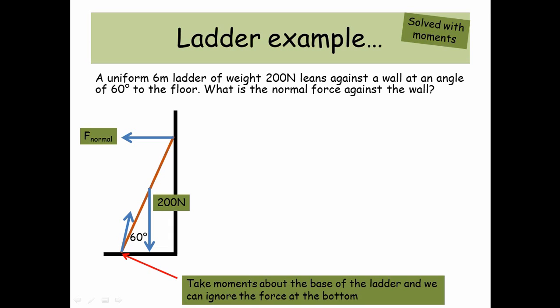So what we're going to do is we're going to take the moment about the base of the ladder, so that means we can ignore the force at the bottom, because remember, what is a moment? Well, it's a force times a distance, and there is a force there, but the distance to that point in space is zero. So if there's no distance, a force times a distance that's zero is zero. There is no moment produced by this force going up. So we only need to think about the normal force, or the moment produced by the normal force, and the moment produced by the 200 newtons.